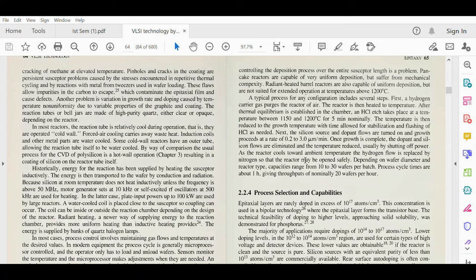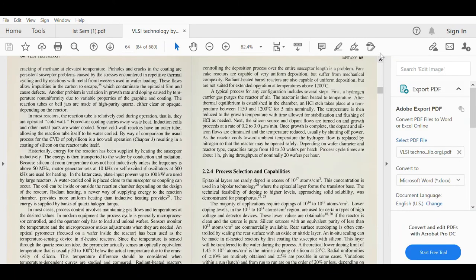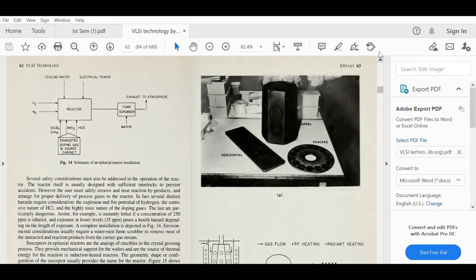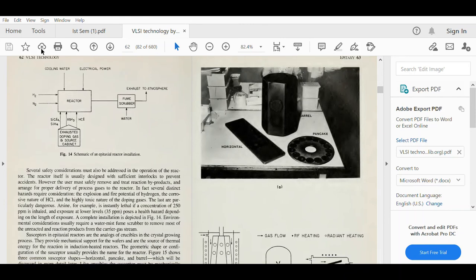As the reactor cools toward ambient temperature, hydrogen flow is replaced by nitrogen so that the reactor may be opened safely. Let me show you that picture again so we can relate it more easily to what this paragraph is discussing. This is the reactor. We are talking about this hydrogen gas, so initially hydrogen gas is provided at a higher temperature. Cooling water is provided, electrical power is there. Then when the process goes further, the temperature is reduced.